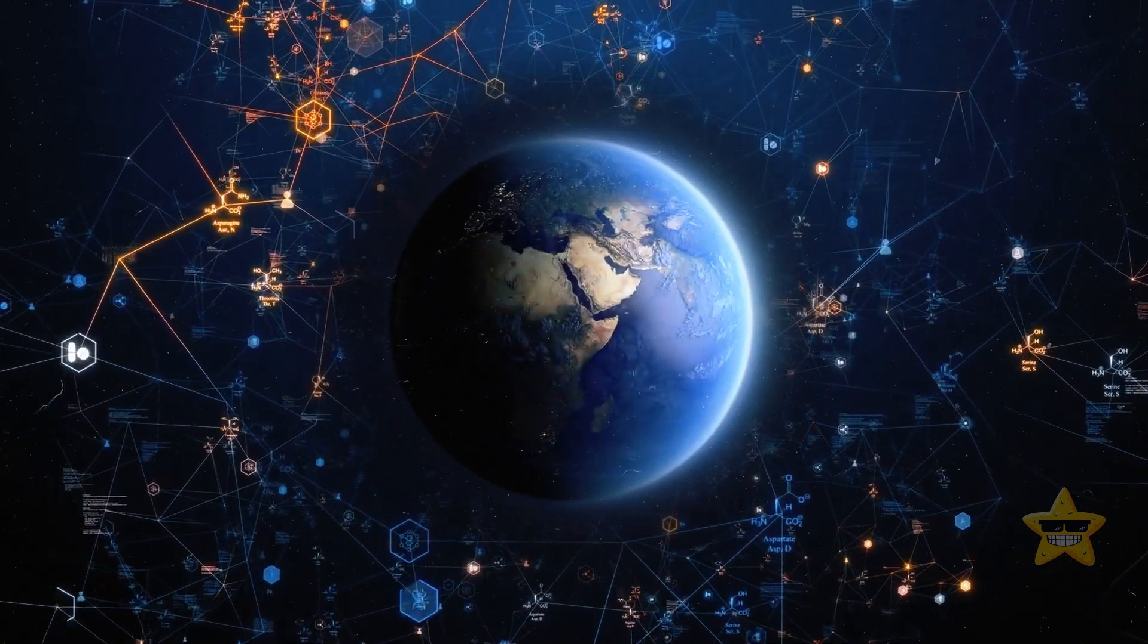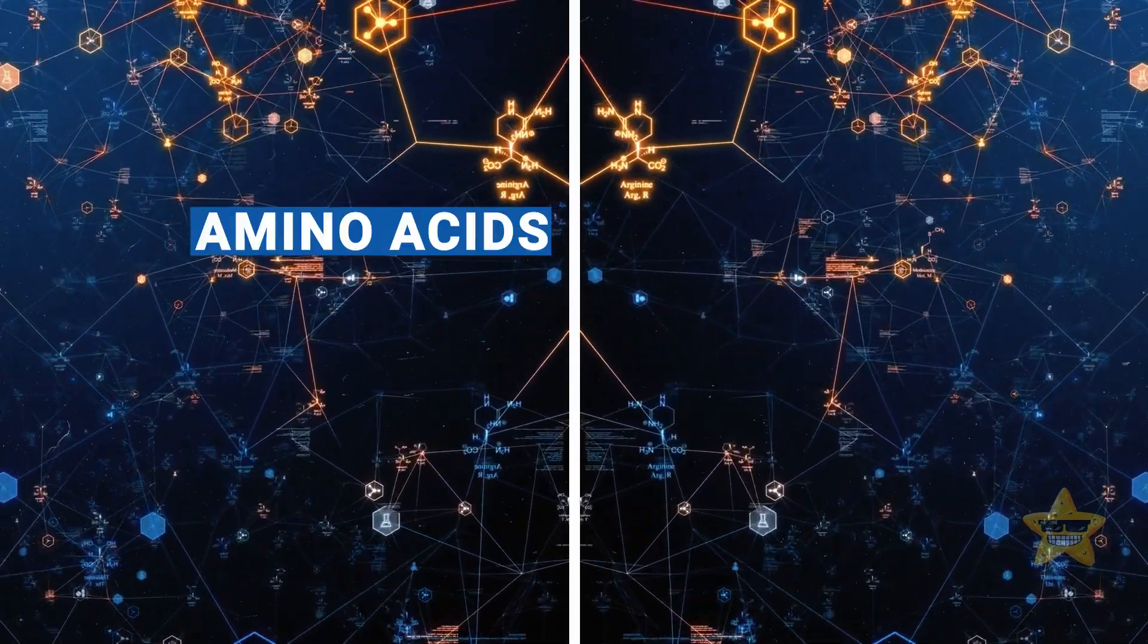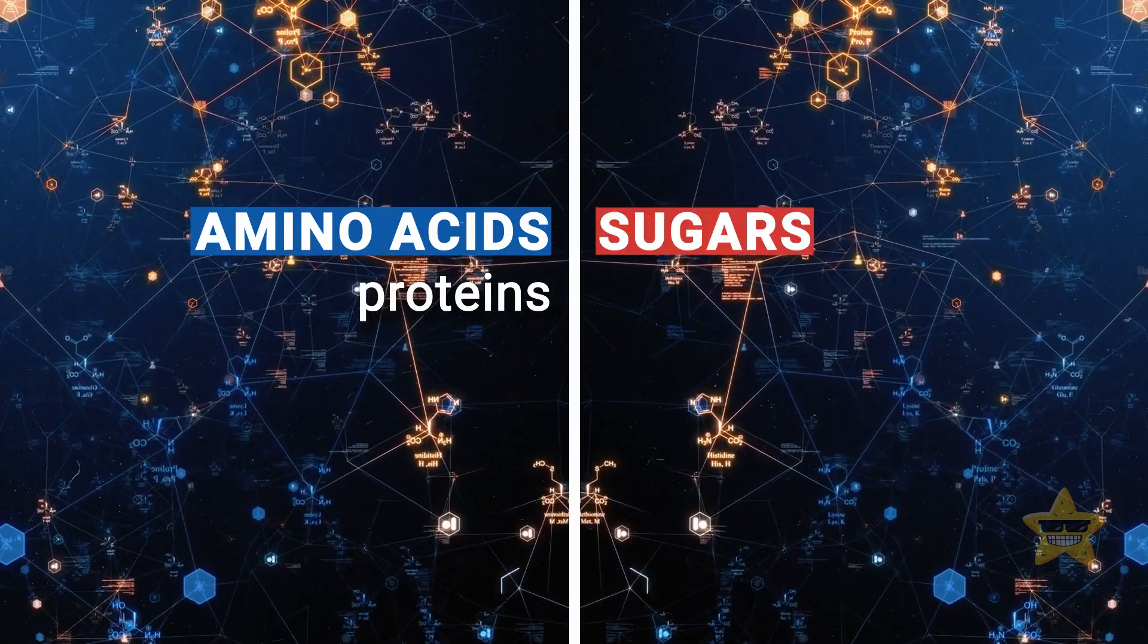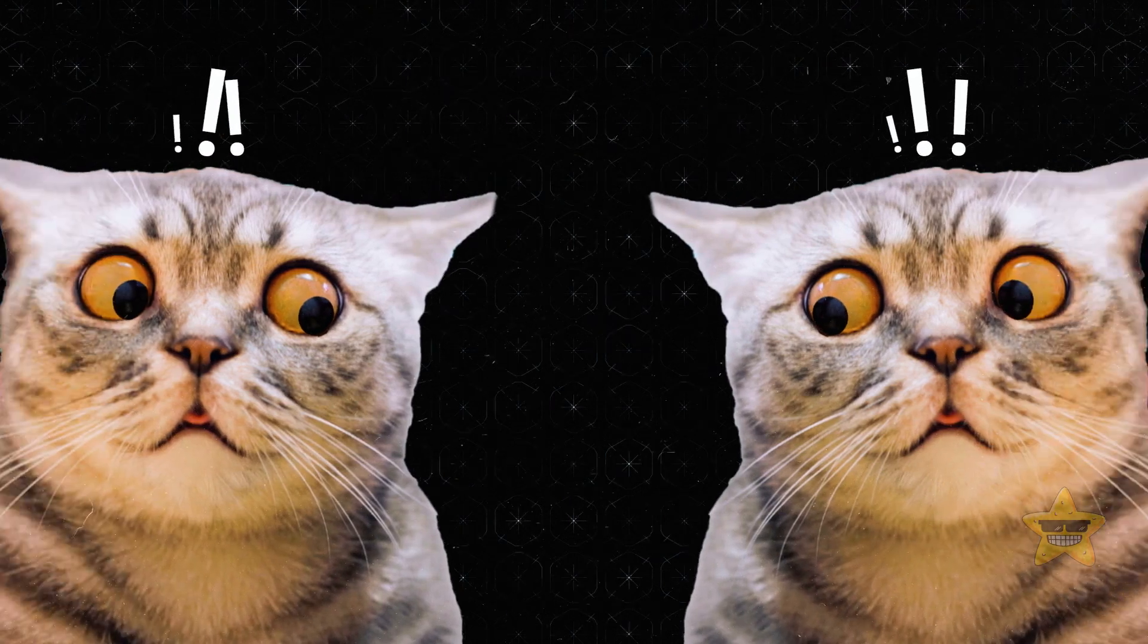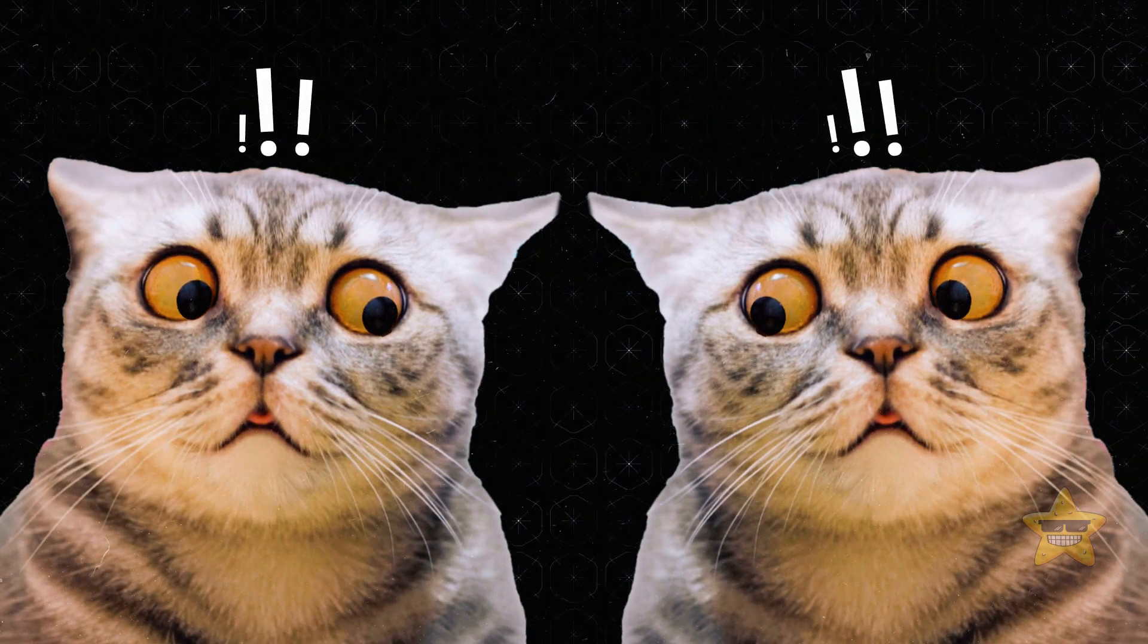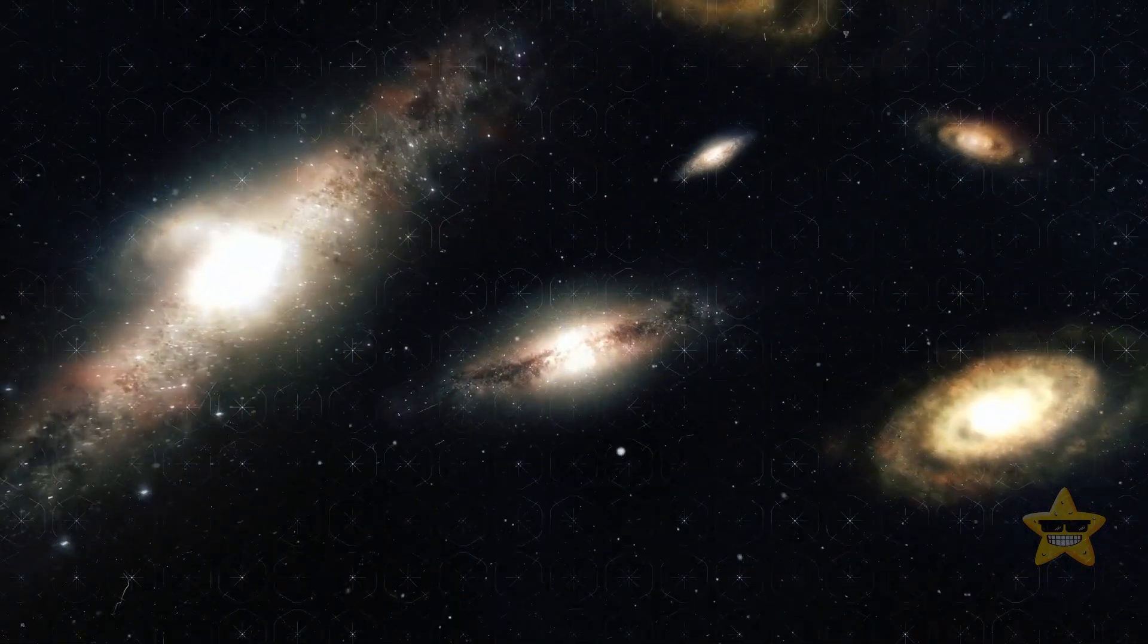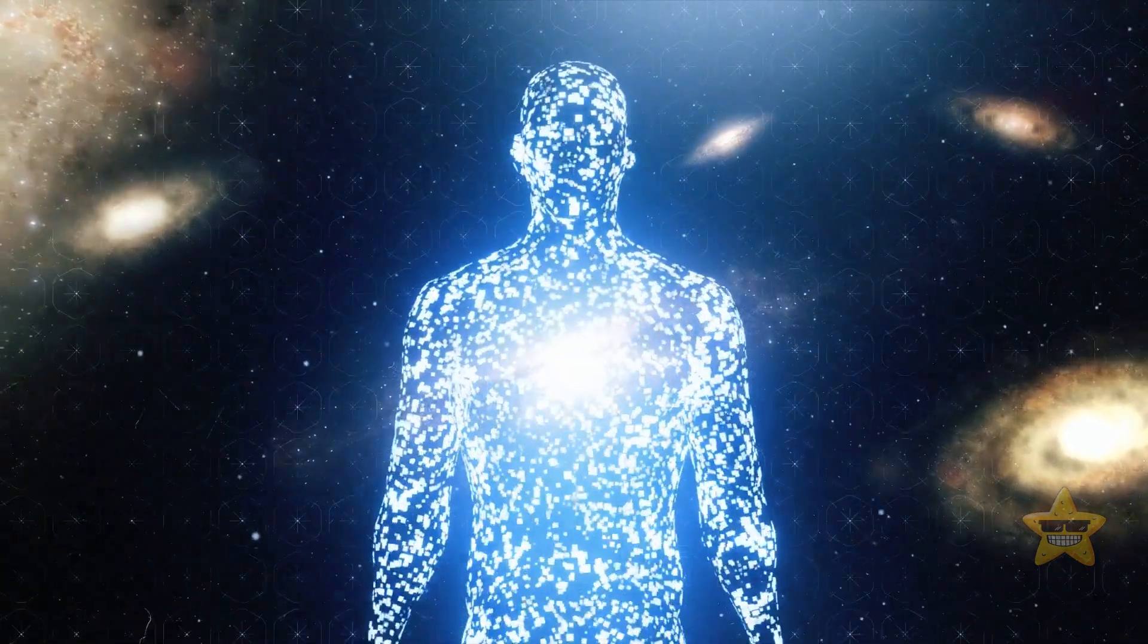Here's the cool part: life on Earth ended up using one specific version of these molecules. For example, the amino acids that make up proteins are left-handed, while the sugars in DNA and RNA are right-handed. These amino acids are very picky and can only interact with molecules of the same chirality.